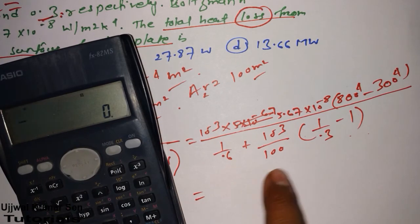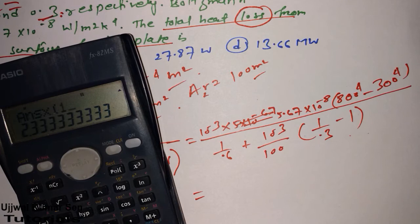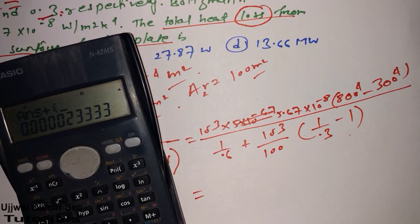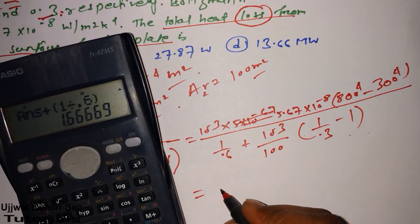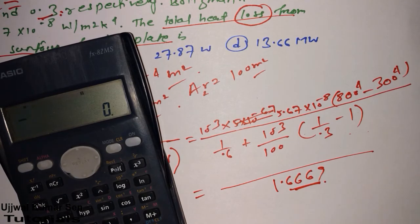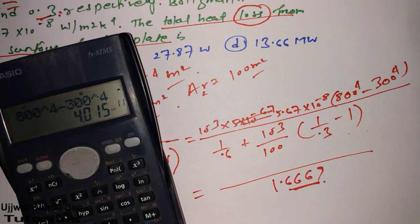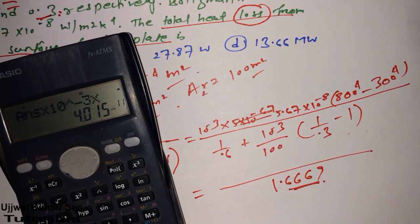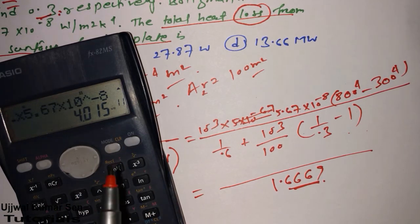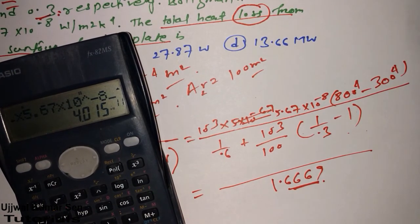Using the calculator, first solve the denominator: (1/0.3 − 1) × (10⁻³/100) + 1/0.6, which gives 1.6669. Always take up to four decimal places to avoid error. For the numerator: (800⁴ − 300⁴) × 10⁻³ × 5.67 × 10⁻⁸ = 22.76505. I recommend practicing with an online calculator at home, since physical calculators are not allowed in GATE.